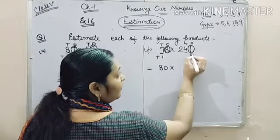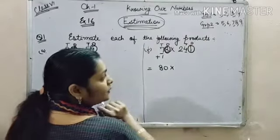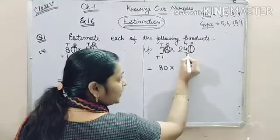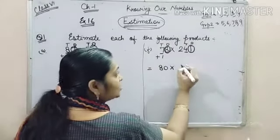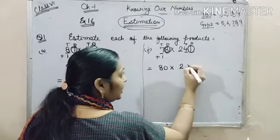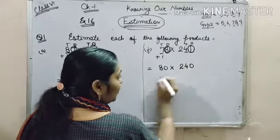In the second number, 1's place is 1 which belongs to group 1. That means there won't be any change in the 10's place. So it will be written as 240 only.